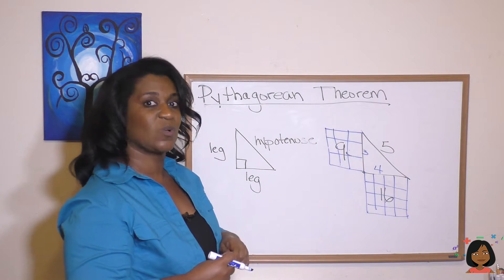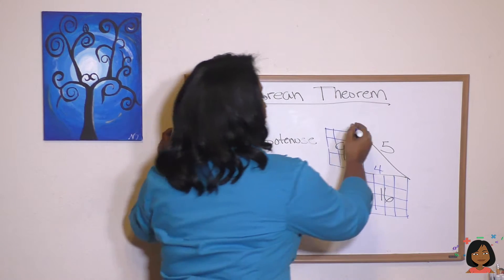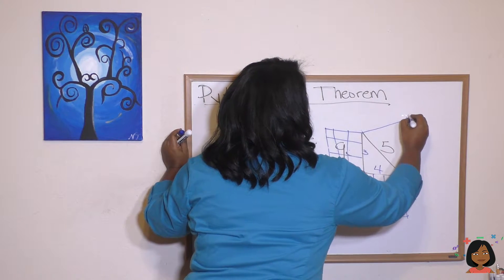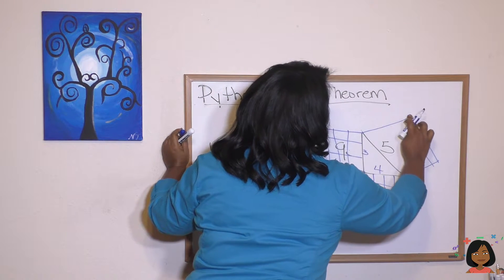So if we added 9 plus 16, we get 25. Well, let's see if it actually works on the other side. We're going to do a 5 by 5 square. And hopefully you're beginning to figure... Well, that's definitely not looking like a square, Nicole. There we go. A little better.